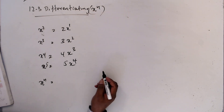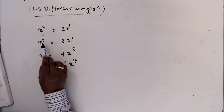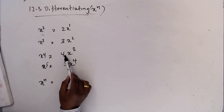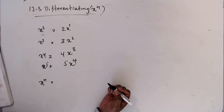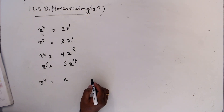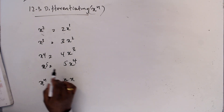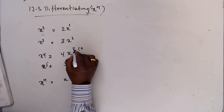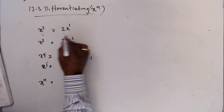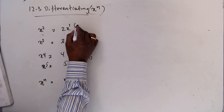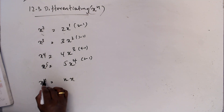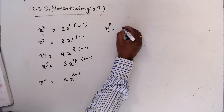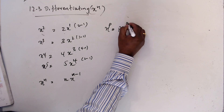Let me take one pattern: the powers go 2→1, 3→2, 4→3, 5→4. And the exponent that comes down follows: 5 means 4, that is 5 minus 1; 4 means 3, that is 4 minus 1; 3 means 2, that is 3 minus 1; 2 means 1, that is 2 minus 1. Likewise, if this is n, the result is n minus 1. So what is xᵖ? xᵖ means p·xᵖ⁻¹.